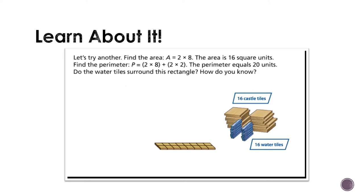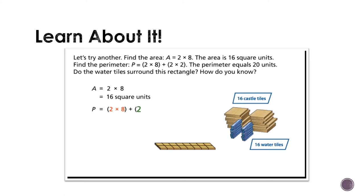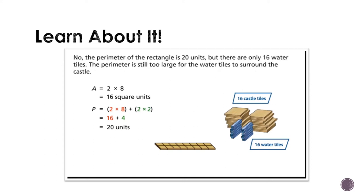Let's try another. Find the area: A equals 2 times 8 — the area is 16 square units. Find the perimeter: P equals 2 times 8 plus 2 times 2 — the perimeter equals 20 units. Do the water tiles surround this rectangle? No, the perimeter of the rectangle is 20 units, but there are only 16 water tiles. The perimeter is still too large for the water tiles to surround the castle.